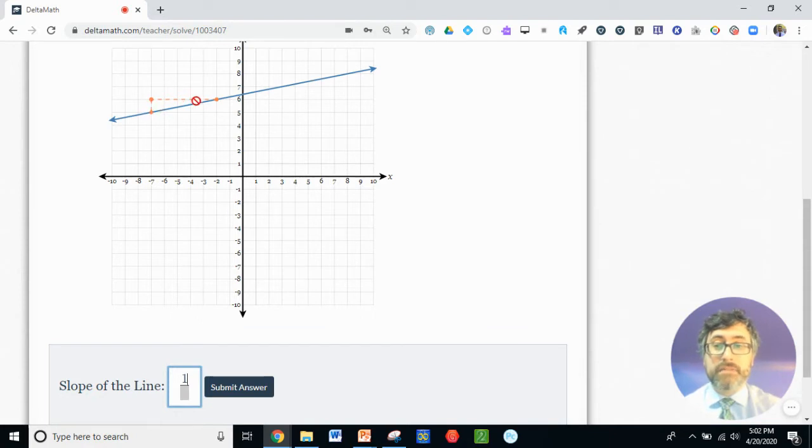That's a positive direction, so I can write one. Then my run, this horizontal dotted line. How far did that go? One, two, three, four, five. So the run is five. I have a slope, a ratio of one over five. I know that it's simplified because the two points that I chose were as close together as they could be. So I'm ready to submit my answer. Yes, let's take a look at a new problem.